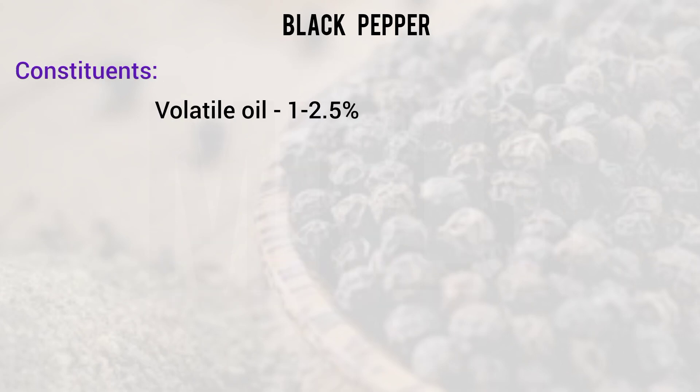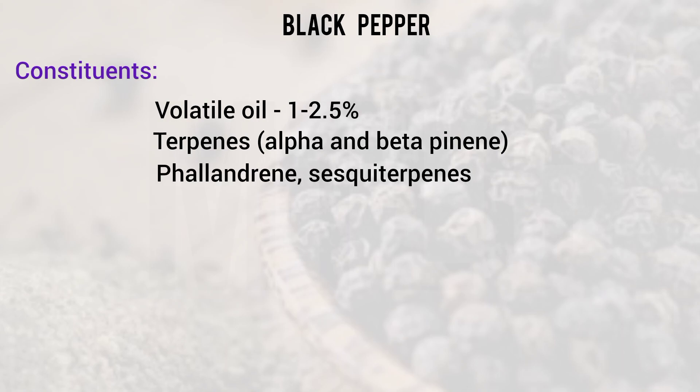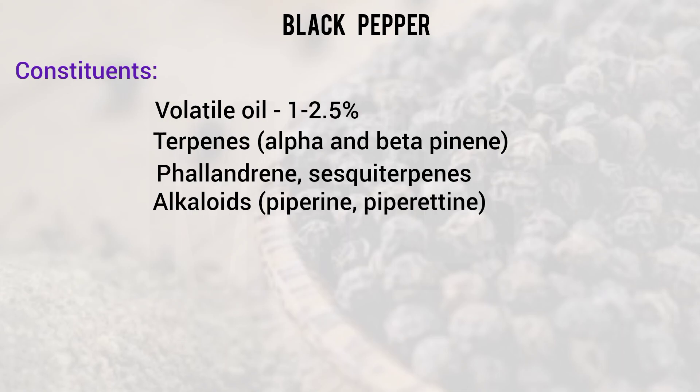The constituents include volatile oil at 1 to 2.5%. This contains terpenes such as alpha and beta pinene, as well as phellandrene and sesquiterpenes. The alkaloids present are piperine and piperettine. Apart from that, there is also resin.